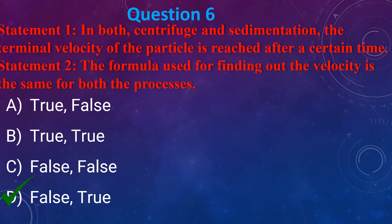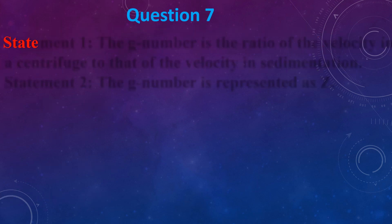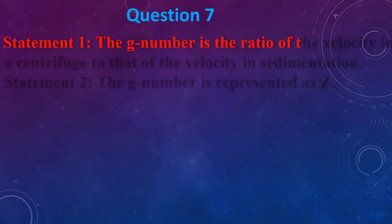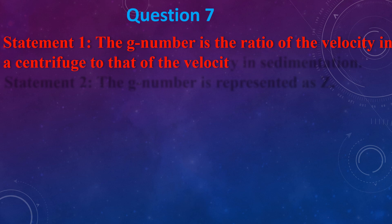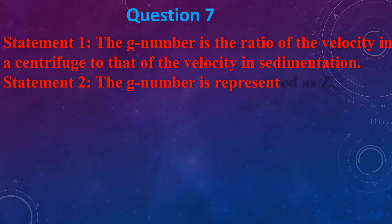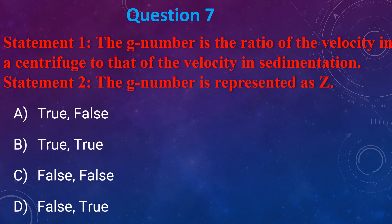Statement 1: The G-number is the ratio of velocity in a centrifuge to the velocity of sedimentation. Statement 2: The G-number is represented as Z. (a) True, False (b) True, True (c) False, True (d) False, True. The answer is (b) both statements are true.